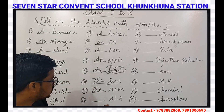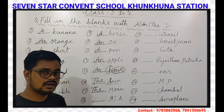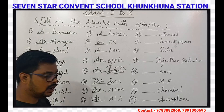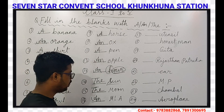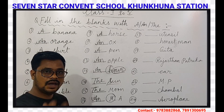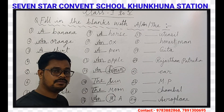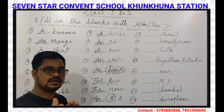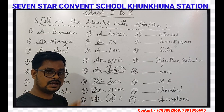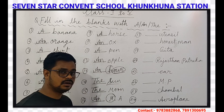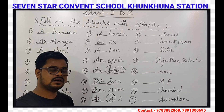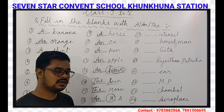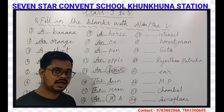Our next question is M. Here AN will come. How? Because while we pronounce M, a vowel sound is coming — the A sound. And A is a vowel sound, so AN will come here. If any abbreviation's first letter is pronounced like a vowel, then we use AN.